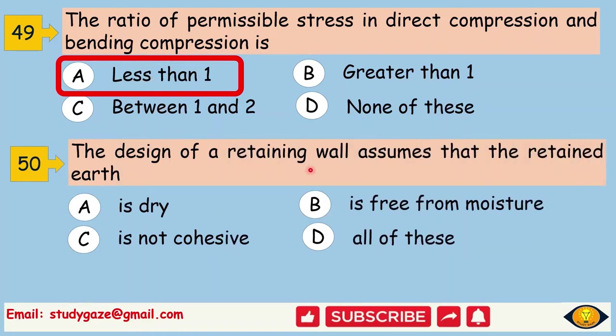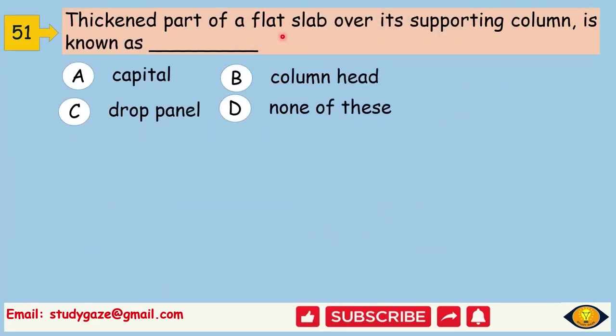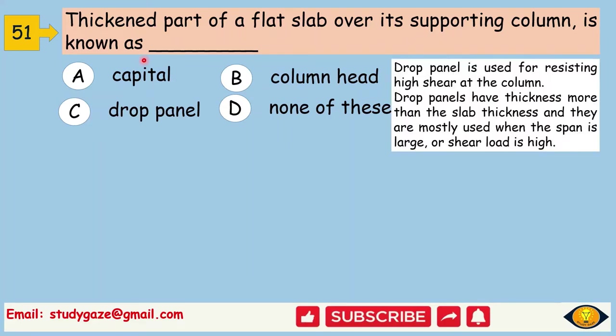The design of a retaining wall assumes that the retained earth. All of these is dry, is free from moisture, is not cohesive. The thickened part of a flat slab over its supporting column is known as drop panel. Drop panel is used for resisting high shear at the column. Drop panels have thickness more than the slab thickness and they are mostly used when the span is large or shear load is high.